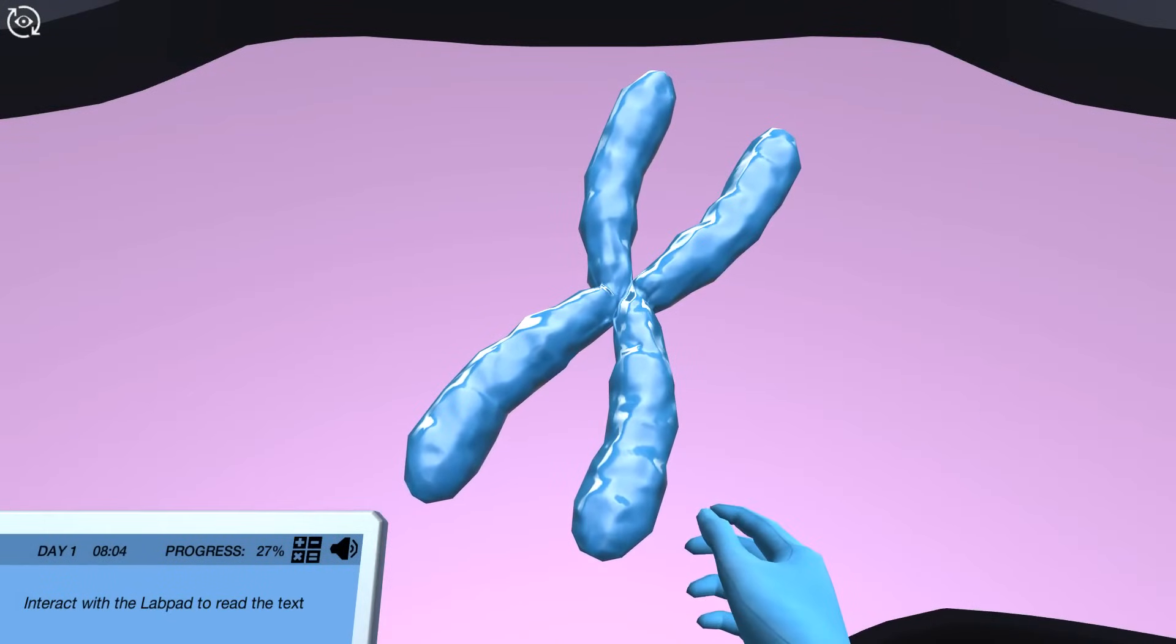The information for building the cell's components is stored in the chromatin, a complex mix of proteins and DNA. Chromatin is usually spread out in the nucleus but right now, it is packaged into chromosomes.